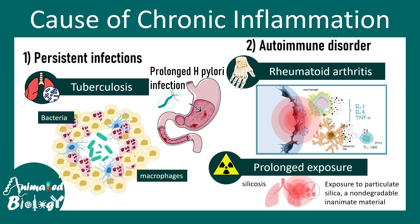There could be prolonged exposure to toxic substances. Imagine a worker in a factory who is getting exposed to silica on a daily basis — it's a chronic exposure, meaning it's happening for a long time over a period of time in his lifetime. In that case it would lead to prolonged chronic inflammation.